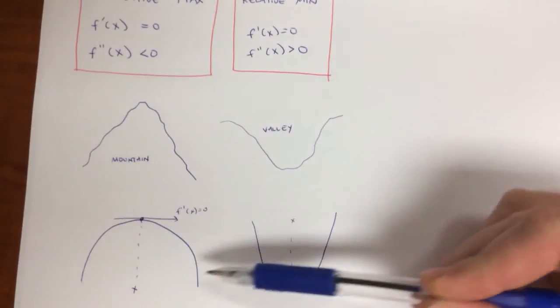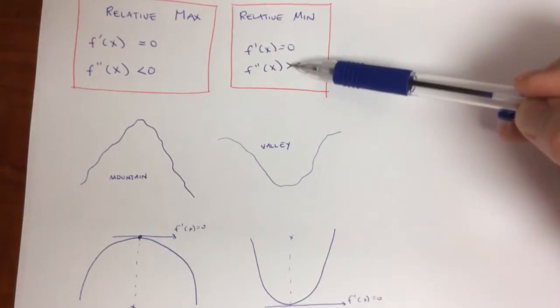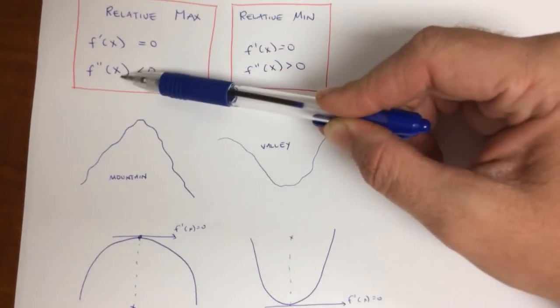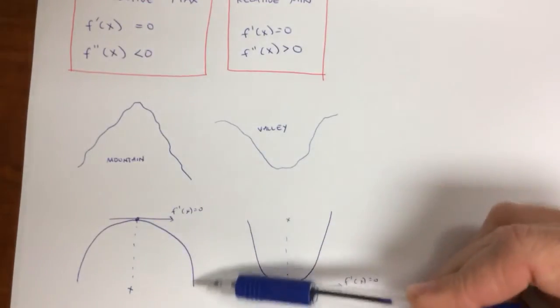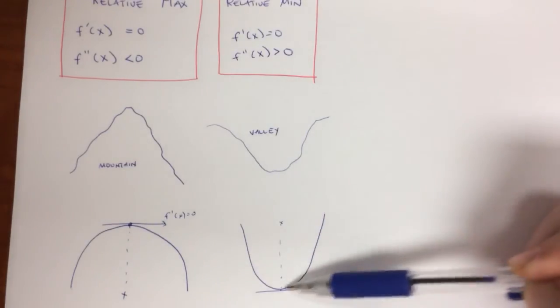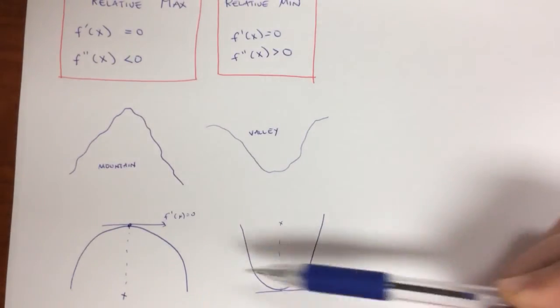The difference between these two functions is the second derivative. In a relative max, the second derivative is less than zero, which means we have a frowny face function. And the second derivative is greater than zero, which means we have a happy face function, meaning we just found the minimum.